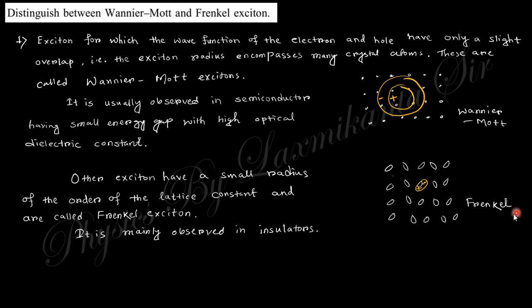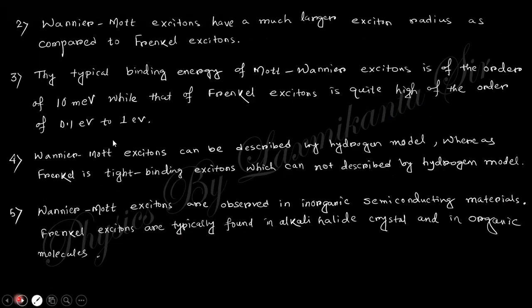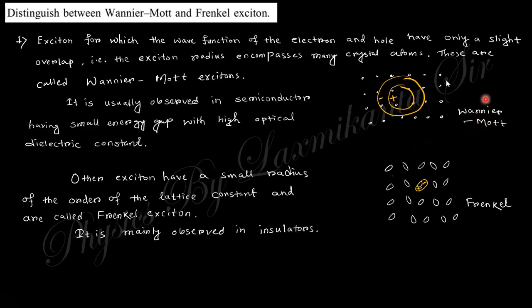Wannier-Mott generally occurs in the dielectric semiconductor with high optical dielectric constant, and Frenkel generally occurs in insulators. Wannier-Mott exciton has much larger exciton radius. You can see here the radius of the Wannier-Mott is larger than Frenkel.